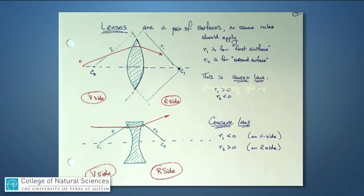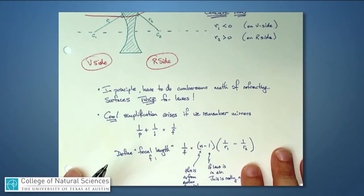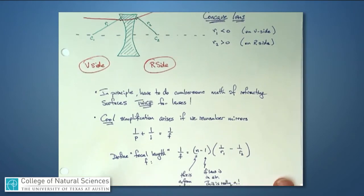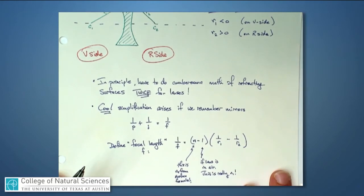As with mirrors, there are just two equations for us to learn. And that's a wonderful thing, because it's hard for us to remember lots and lots of equations. The two equations are the same one for mirrors as it was the case for mirrors. There's 1 over P plus 1 over I is 1 over F.